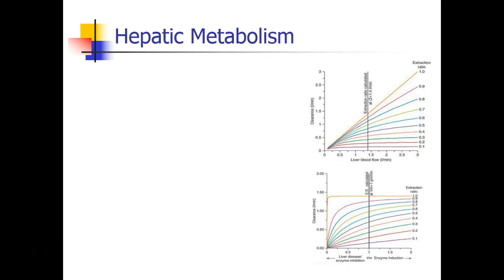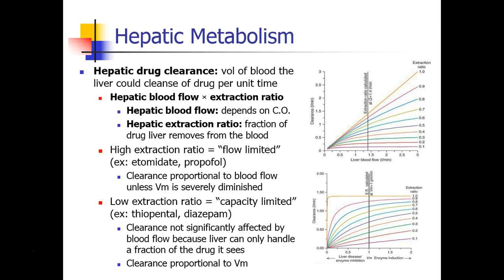Now we're going to speak about hepatic metabolism in some detail. Hepatic drug clearance is simply the volume of blood that the liver could cleanse of drug per unit time. This is just using our definition of the word clearance and applying it specifically to clearance as performed by the liver.